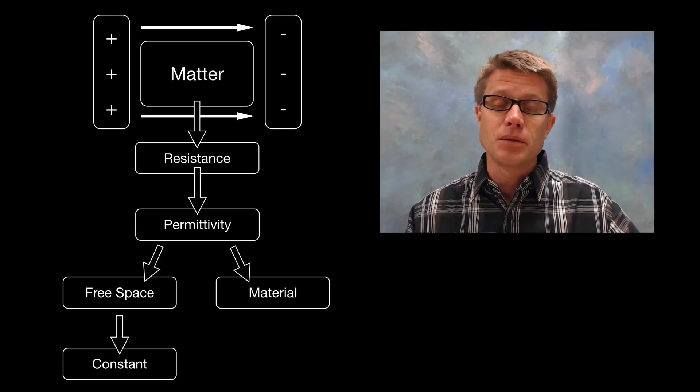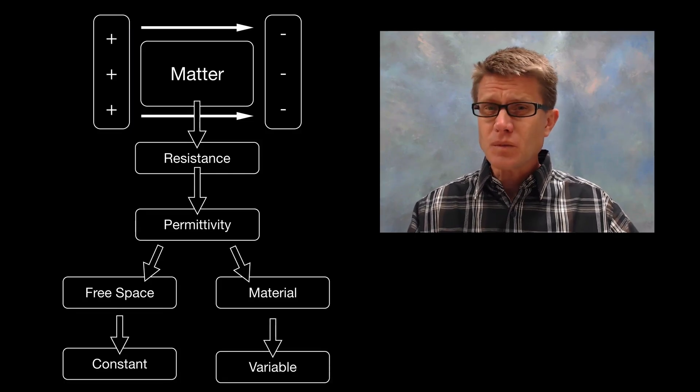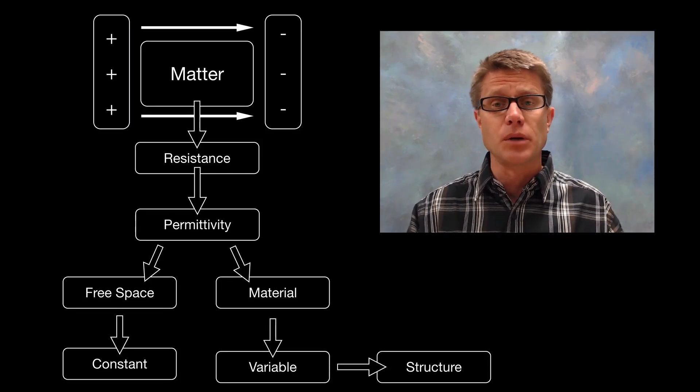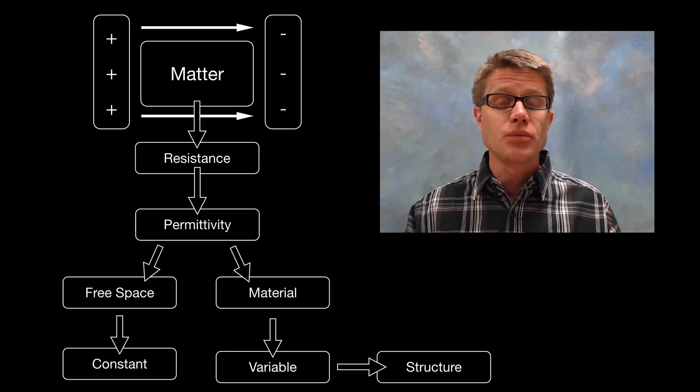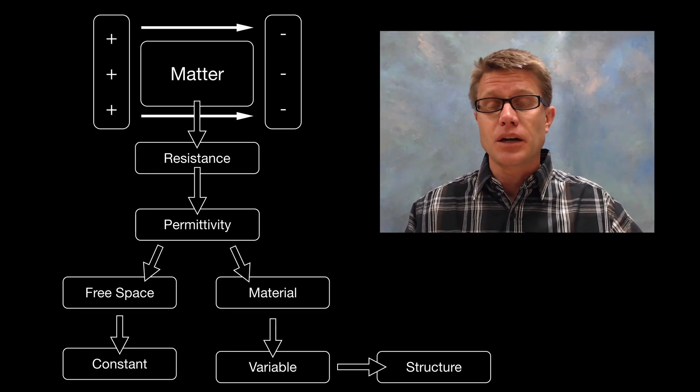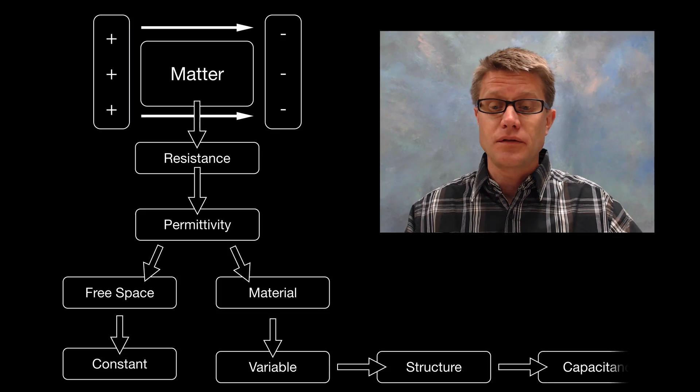If we have other materials, their permittivity is based on their structure. Their atomic or molecular structure is going to be variable. As we vary the permittivity we can make a capacitor that is more or less efficient.